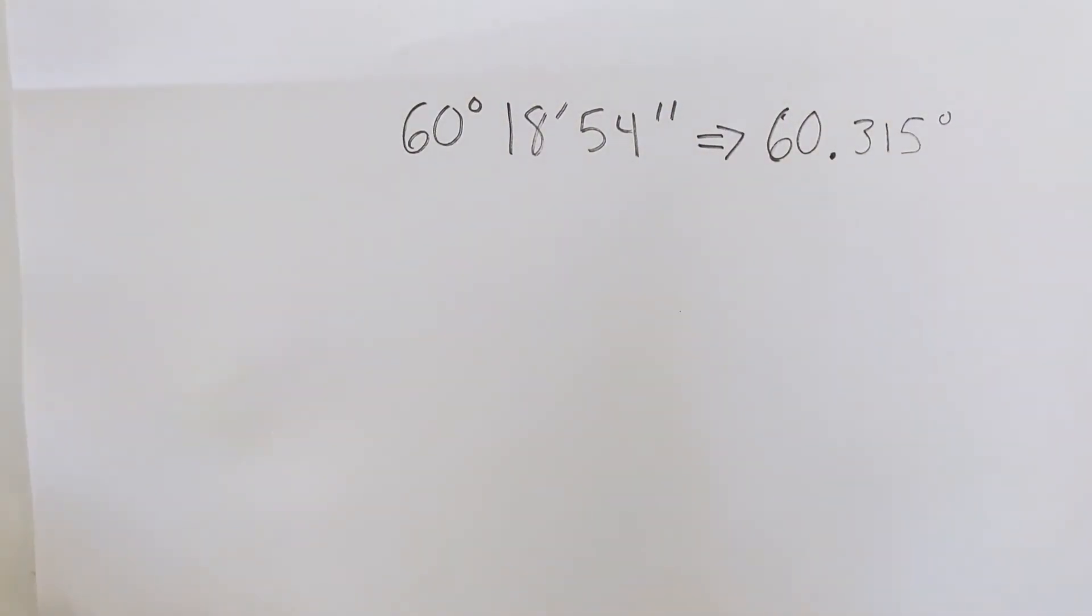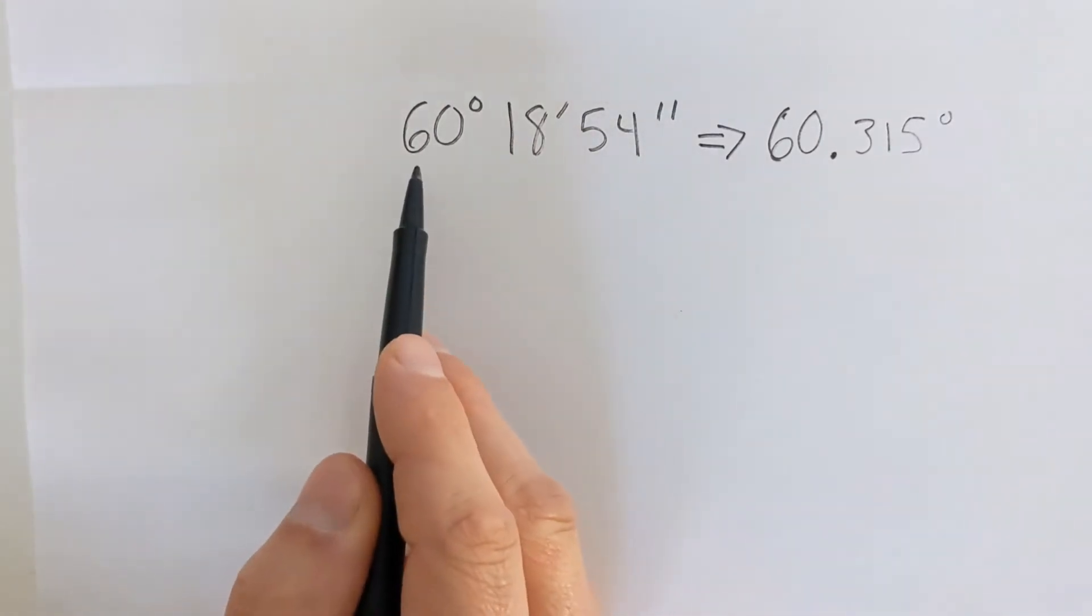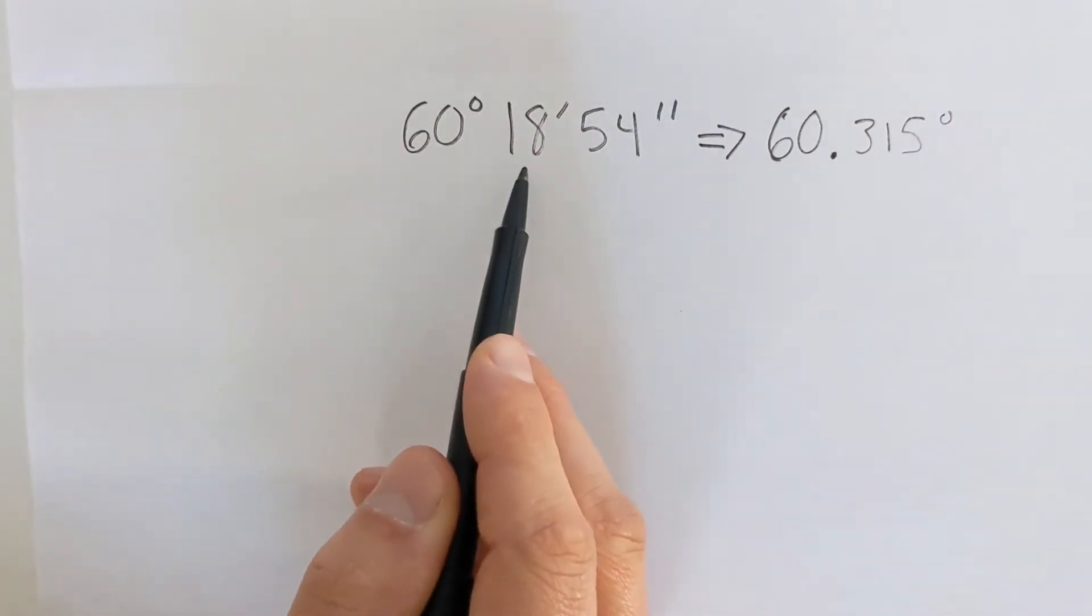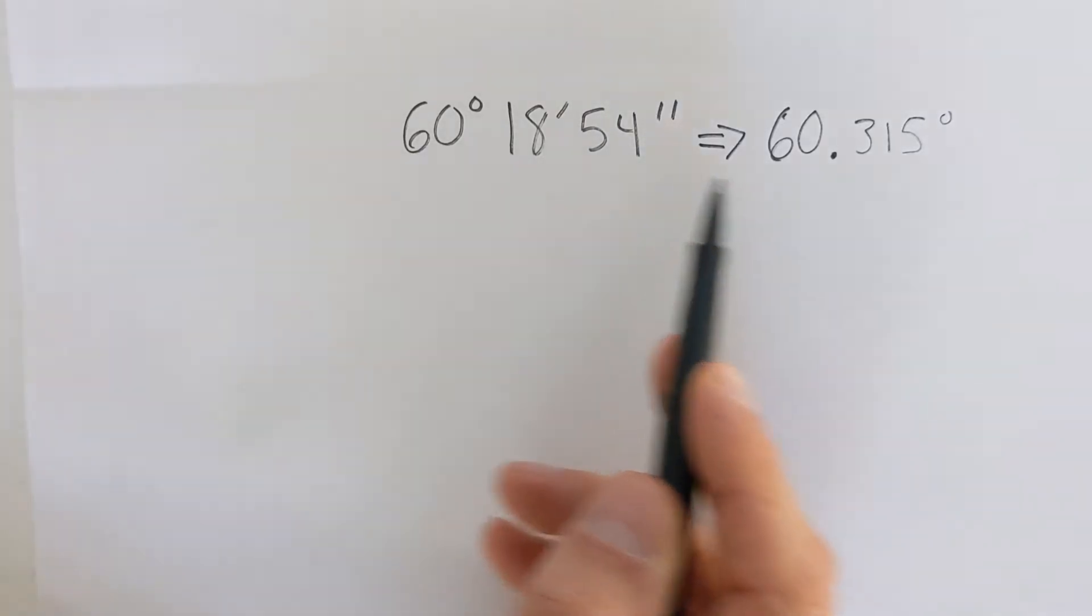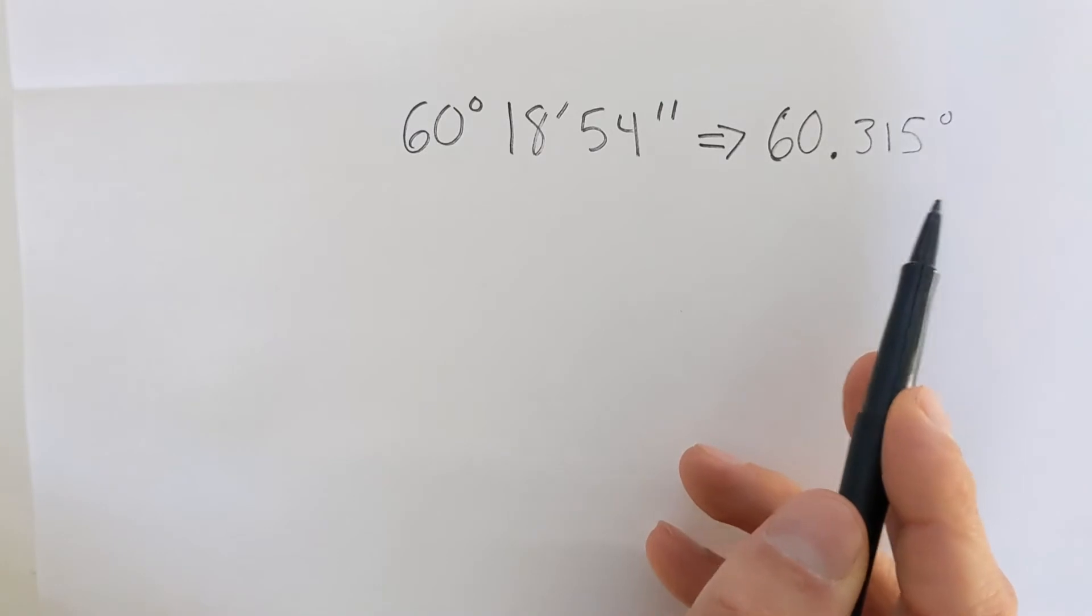There are two formats we're used to seeing angles in. One is degrees, minutes, seconds. So in this example 60 degrees, 18 minutes, 54 seconds. Or in terms of decimal degrees, so 60.315 degrees.